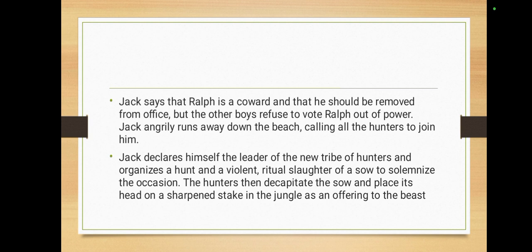When Simon woke up, he went to the mountain where he saw the dead parachutist, understanding that the beast does not exist externally but rather within each individual boy. Simon traveled to the beach to tell the others what he had seen. However, the other boys were in a chaotic frenzy — even Ralph and Piggy had joined Jack's feast — and when they saw Simon's shadowy figure emerge from the jungle, they fell upon him and killed him with their bare hands and teeth.